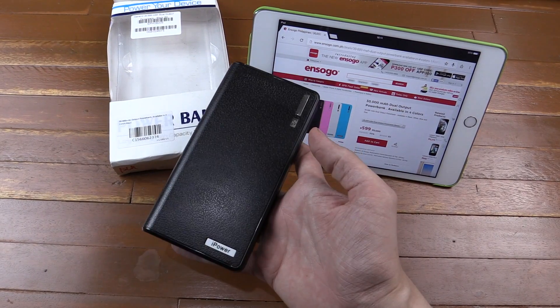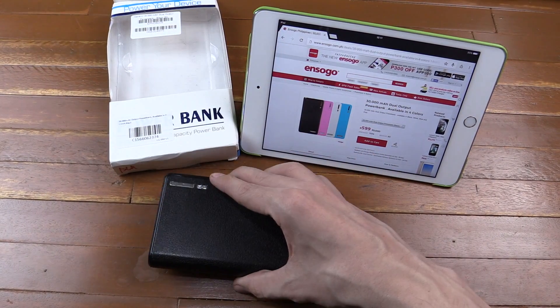Hi everyone, today we're going to take a look at this 30,000 mAh power bank from Ensogo.